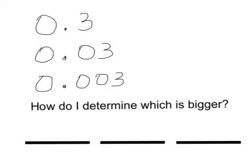So how do we tell which is bigger? The first thing I want you to look at is how many places there are after the decimal. There is one place here, two places here, and three places here. The more places past the decimal, the smaller the decimal.